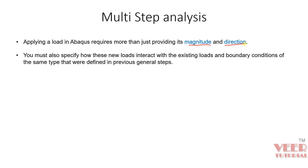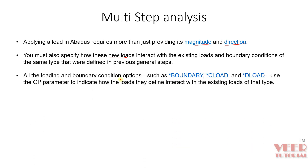For example, we need to specify how the new load is going to interact with the existing load — whether it is depending on the existing load or it is a completely new load step. We need to define a parameter for this, and this parameter can be defined for boundary, concentrated load, or distributed load — for all types of load and boundary conditions. We define this parameter as the op parameter.